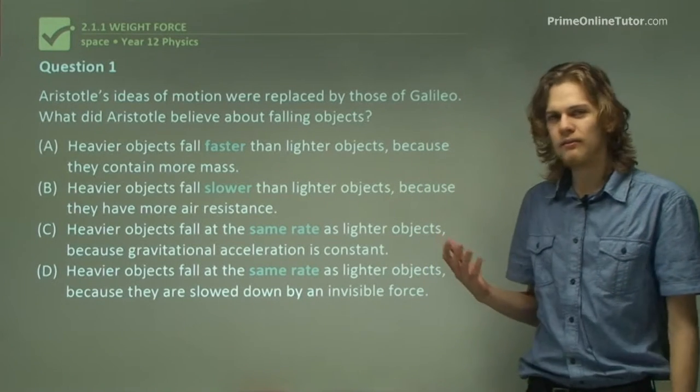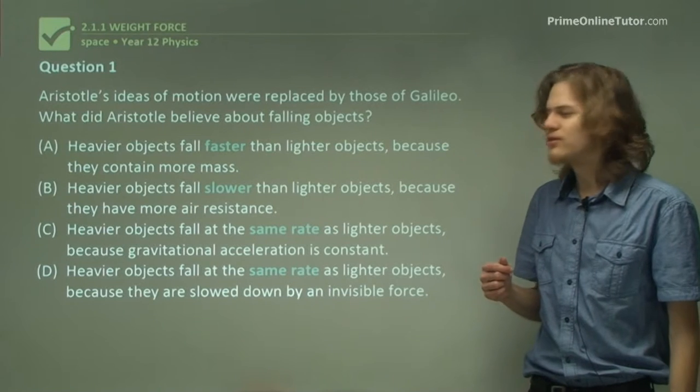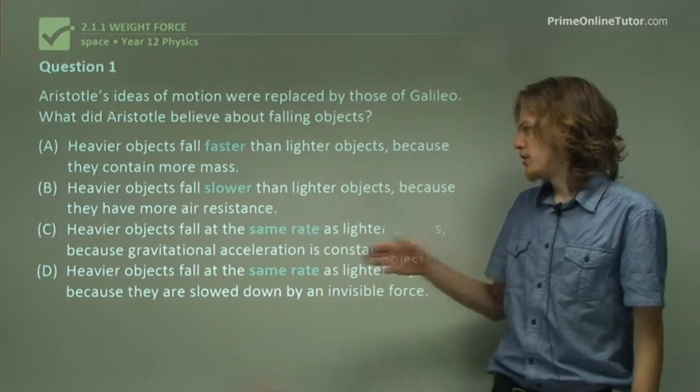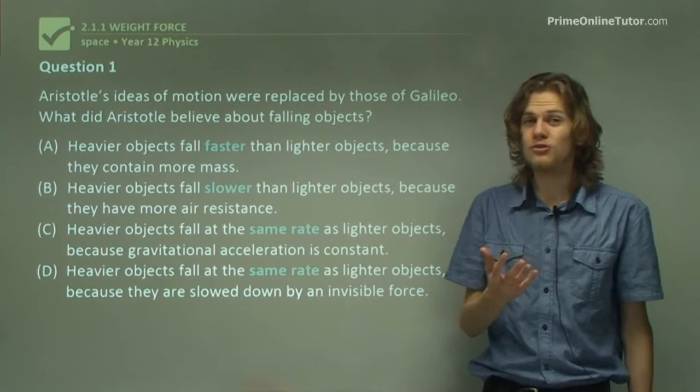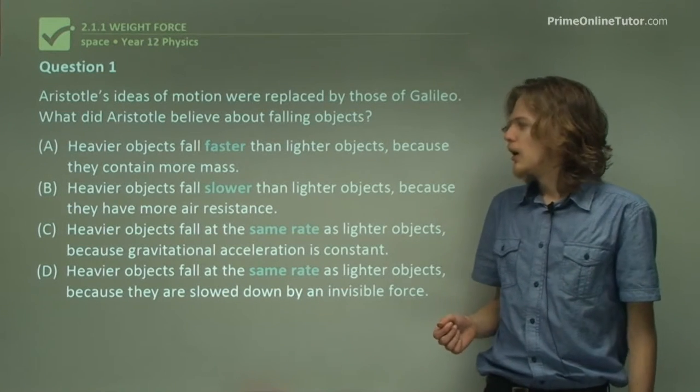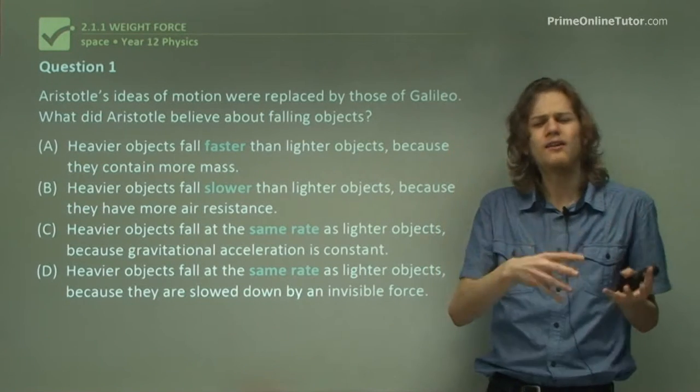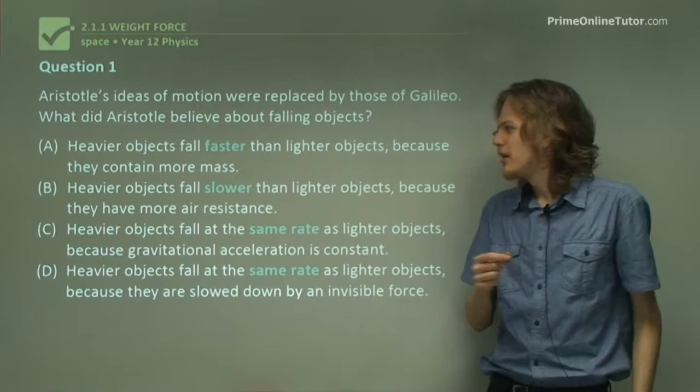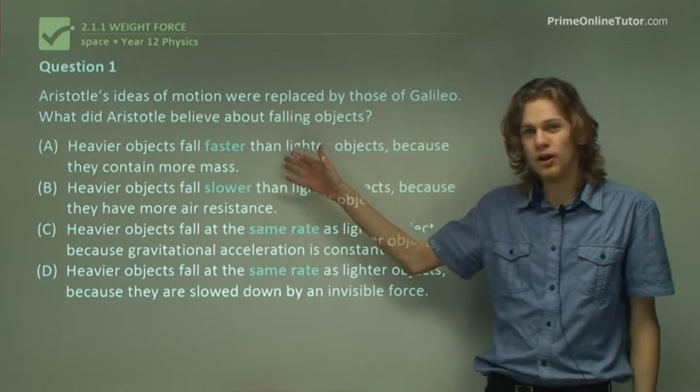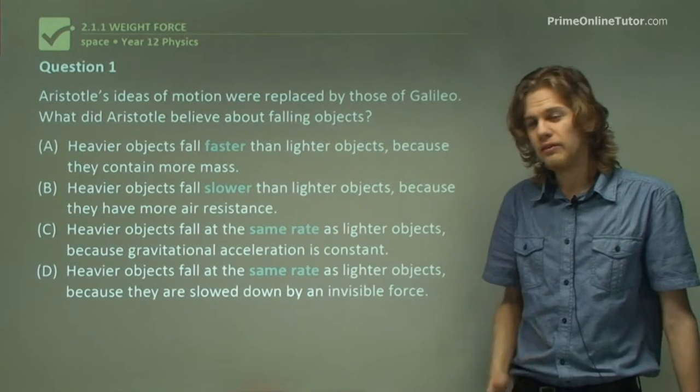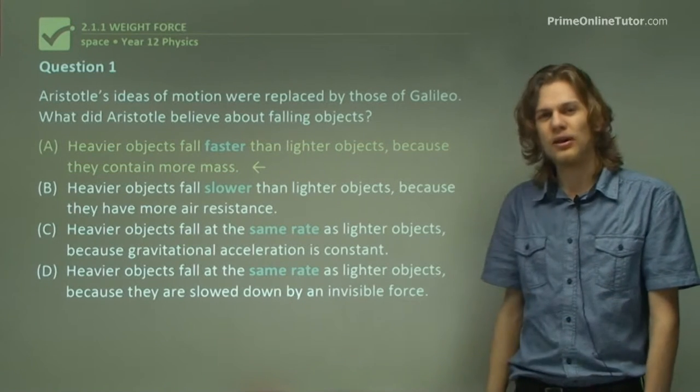So the answer here is almost an intuitive answer. We know that it can't be C because that was Galileo's idea. But if we think about how heavy objects land harder than lighter objects, it makes us think that they must be falling faster. This is not what's happening, but it's what Aristotle believed. So A is the correct answer.